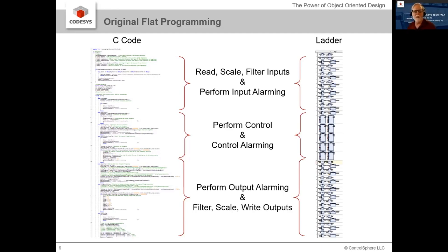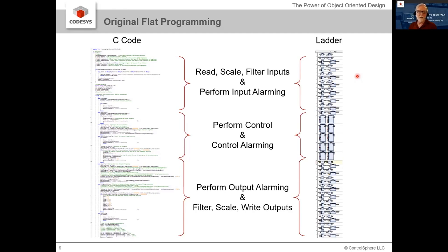Let's take a little walk down memory lane. Back in the beginning, in the 1970s when we wrote PLC code — whether in C, Pascal, Fortran, or whatever — everything was pretty much flat. We didn't have much memory to use and there wasn't a lot of functionality to carry out. We'd read the input, scale it, perform any alarming, do the control, and do the same on the output side. Later on, we did get functions which allowed some structuring, but it was essentially still flat.